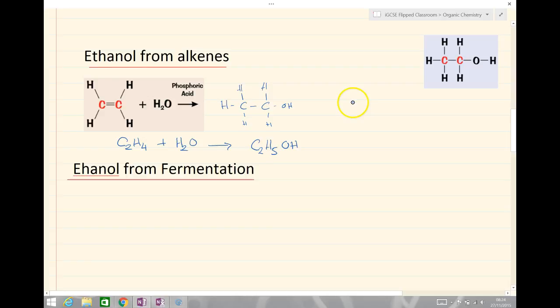The conditions we use for that, this is done on an industrial scale, is 300 degrees Celsius, quite a high temperature, and 60 to 70 atmospheres. Now atmospheres is a unit of pressure and normal room pressure is about one atmosphere. So 60 to 70 atmospheres is quite a high pressure and we use phosphoric acid, H3PO4, as a catalyst.